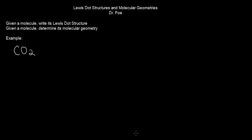Welcome to the second example of Lewis dot structures and molecular geometry. Given a molecule, we're going to write its Lewis dot structure and use that to determine its molecular geometry. The molecule we're working with right now is CO2, covalent again. This is carbon dioxide.